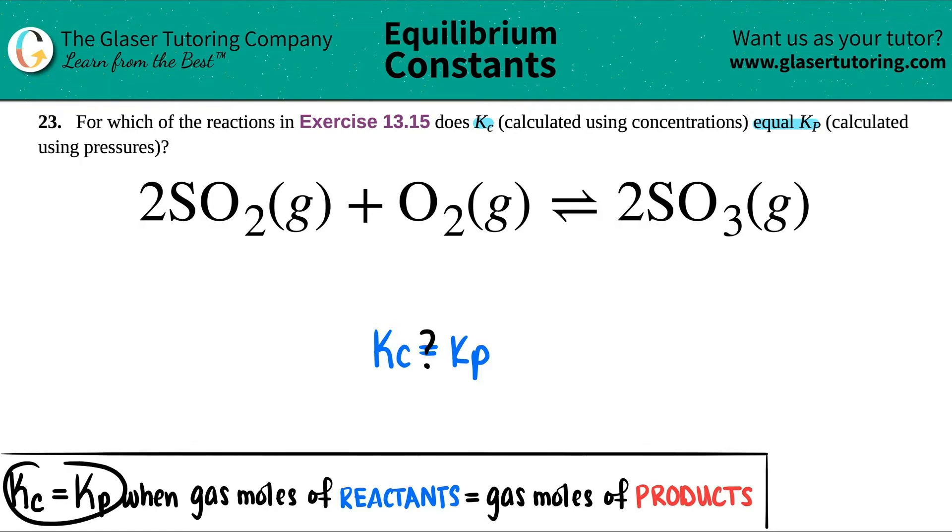Well, here's the rule. If Kc equals Kp, your gas moles of the reactants have to equal the gas moles of the products.